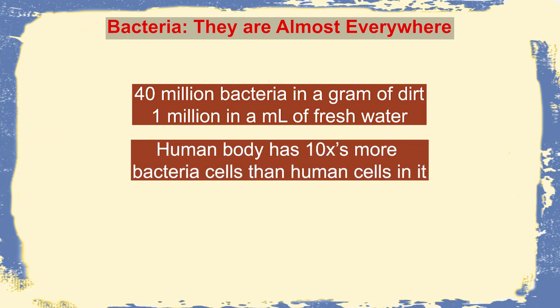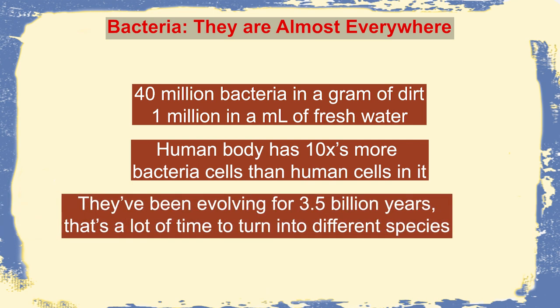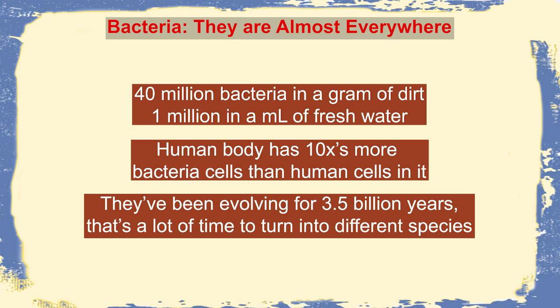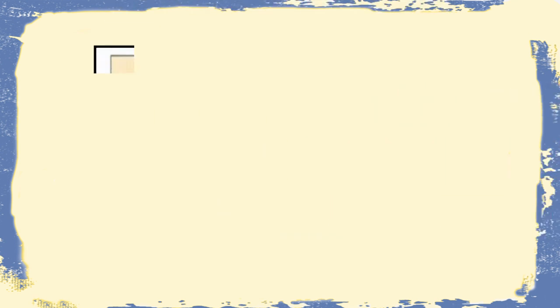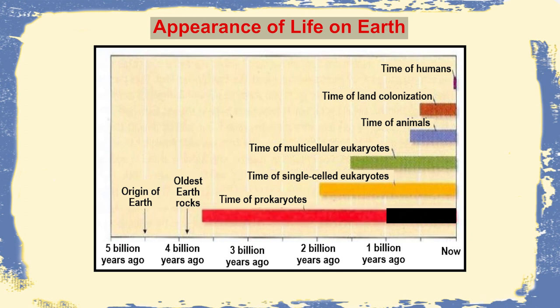The human body has almost 10 times more bacterial cells than human cells. Bacteria have been evolving for almost 3.5 billion years — that's a lot of time to turn into different species. If we look at the appearance of life on Earth, we find that prokaryotes evolved almost 3.5 billion years ago.